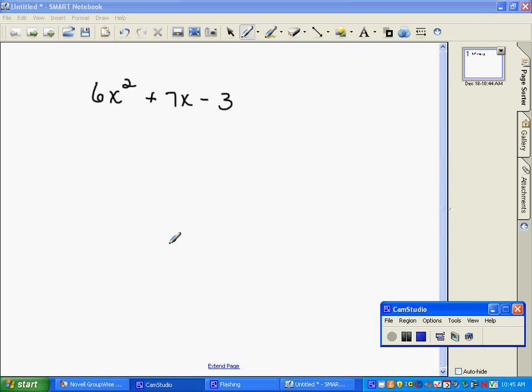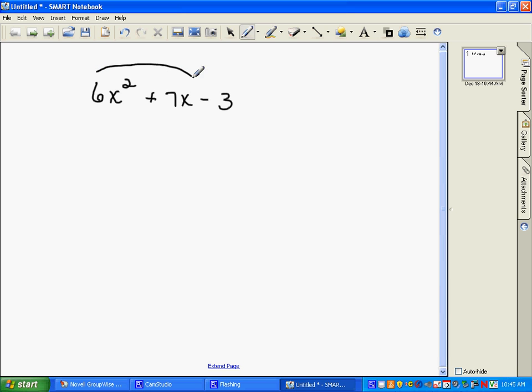In this one, we will do something called the AC method. The AC method represents the fact that the first coefficient in anything that's quadratic we label A, and the last one we label C. So in using the AC method, we will multiply A and C and get minus 18. Factors of minus 18 that add up to 7 are what we're going to use. Factors of minus 18 that add up to 7 would be 9 and negative 2.